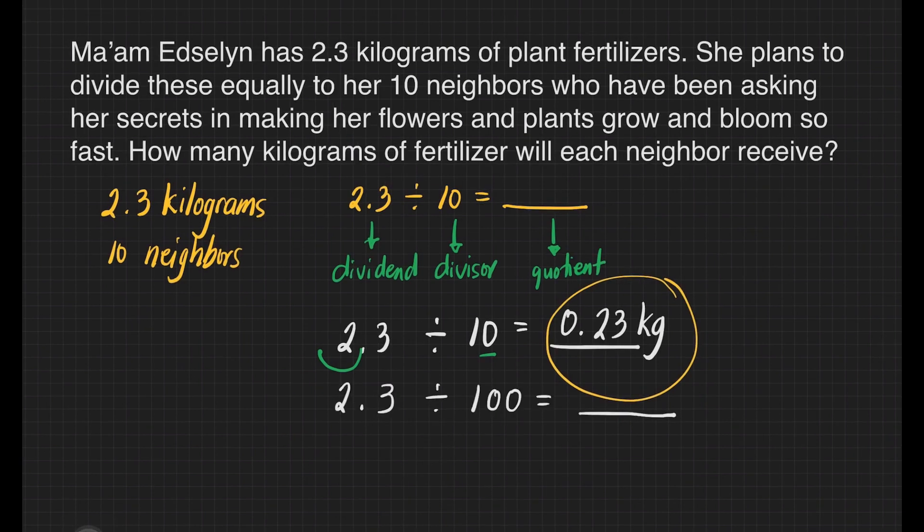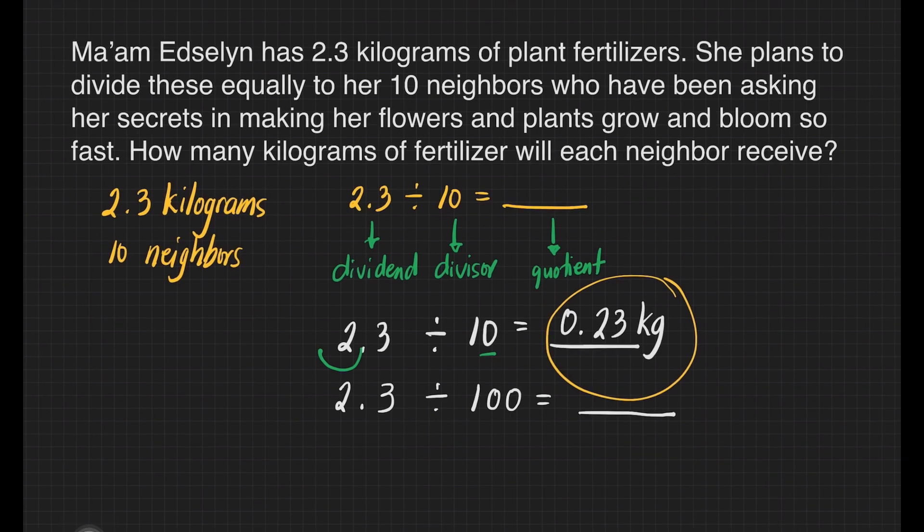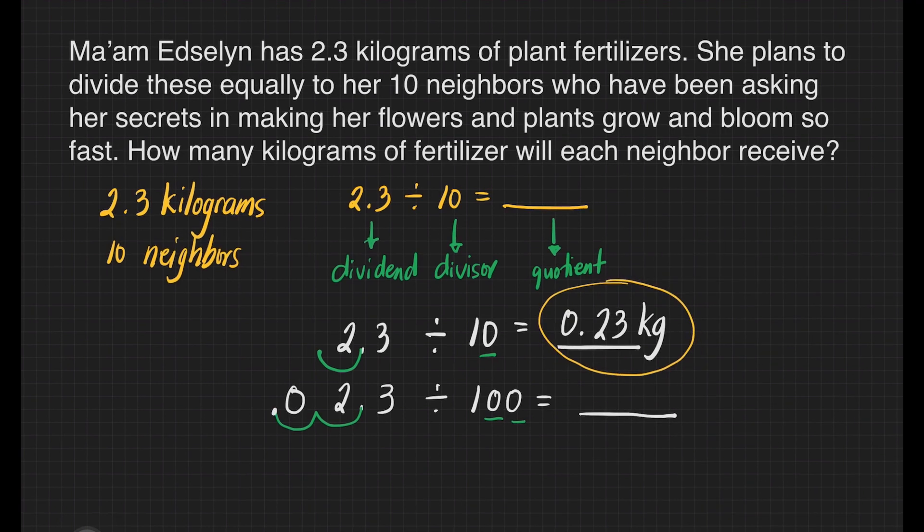What if we have this problem? 2.3 divided by 100. Our divisor has two zeros. That means we will move two decimal places to the left of our dividend. That's going to be 1 and 2. Then we will place zero on the empty space. And our decimal point will be here. That makes our answer 0.023. Our answer is 23 thousandths.